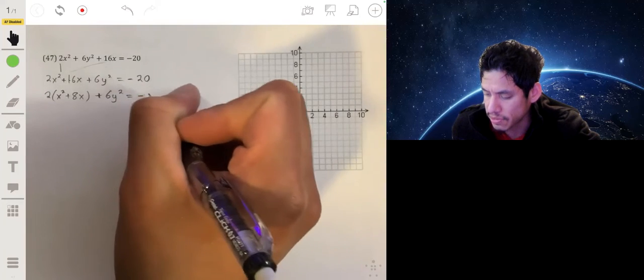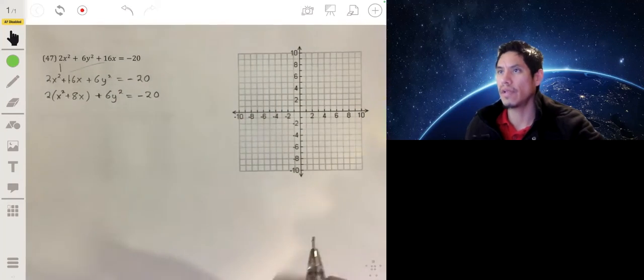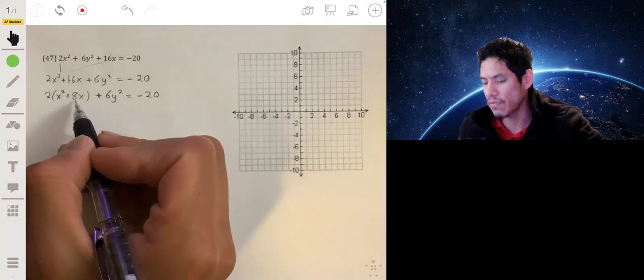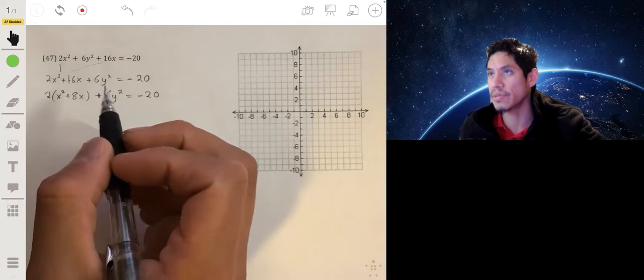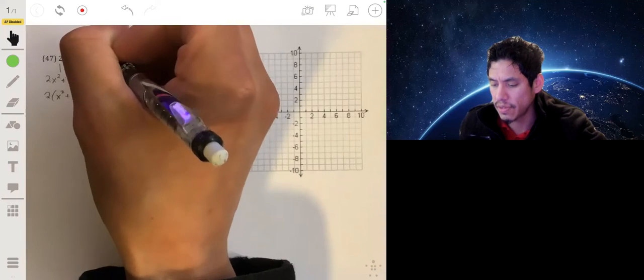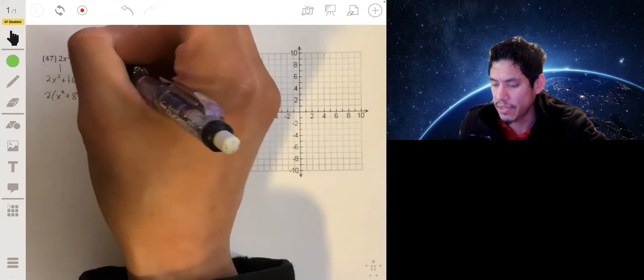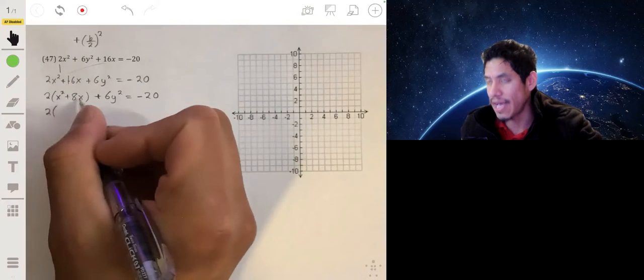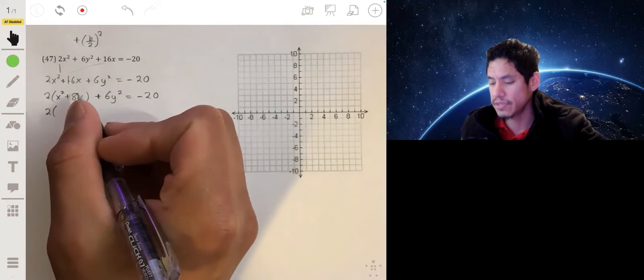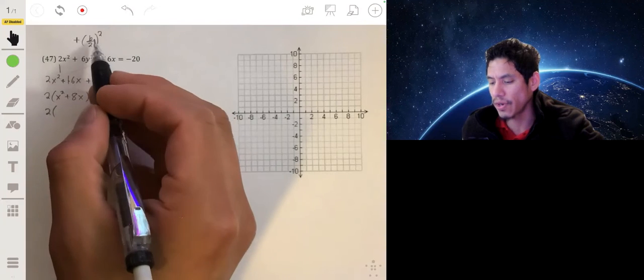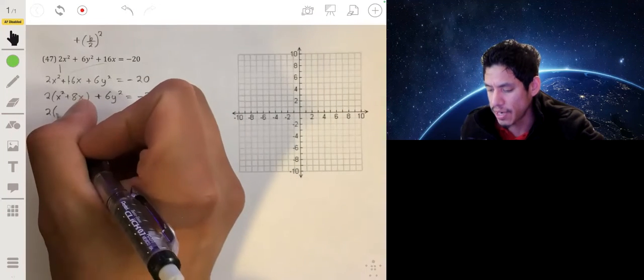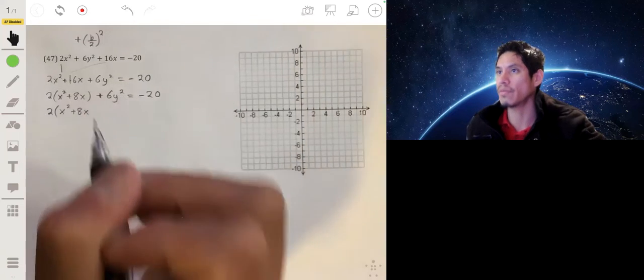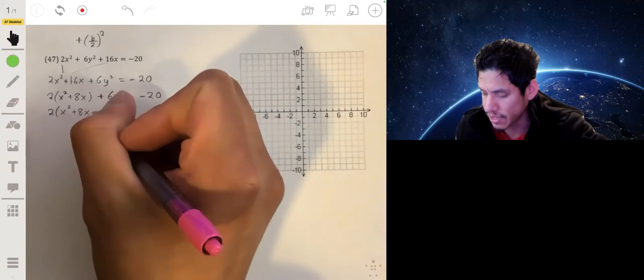Now remember to complete the square, you're going to add b over 2 squared to each side. So for the x variables, b is equal to 8, so 8 over 2 would be 4, so you're going to add 4 squared to the x variable group.